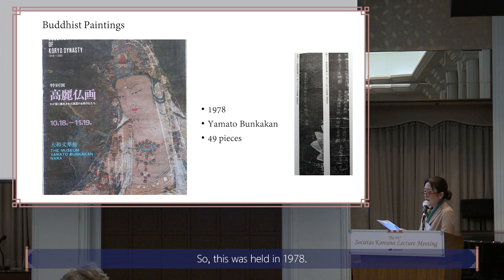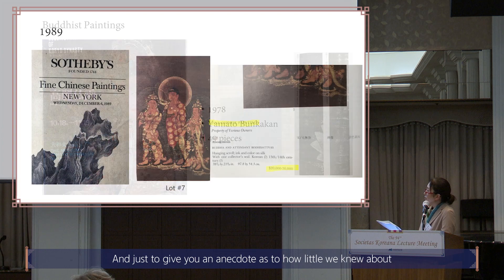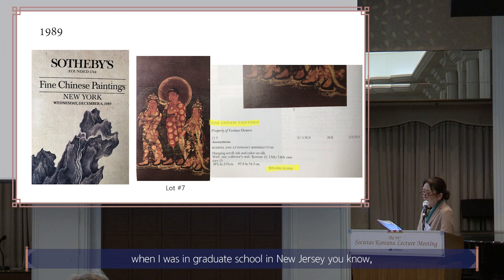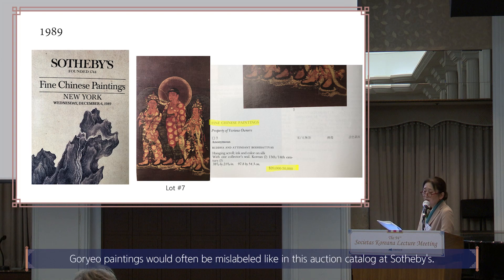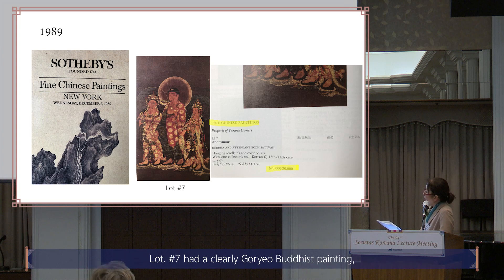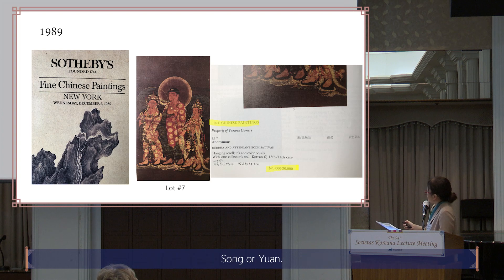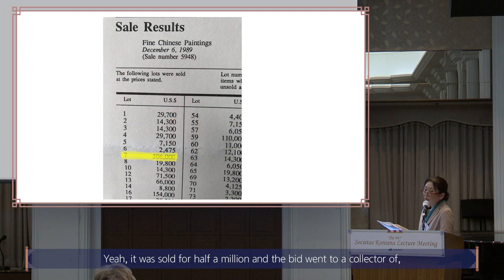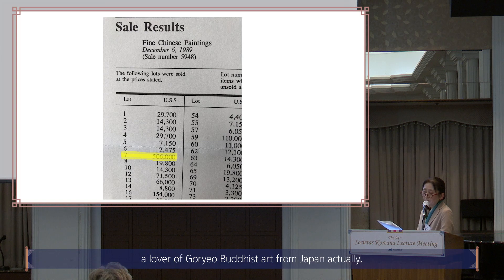To give an anecdote of how little we knew about Koryo Buddhist paintings: back in the late 1980s, when I was in graduate school in New Jersey, Koryo paintings would often be mislabeled — like in a Sotheby's auction catalog where lot number seven had a clearly Koryo Buddhist painting but was called 'Fine Chinese Painting, Sung or Yuan,' estimated at $20,000 to $30,000. But it was sold for half a million dollars. The bid went to a collector and lover of Koryo Buddhist art from Japan.